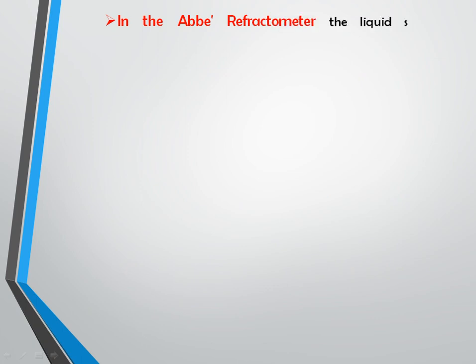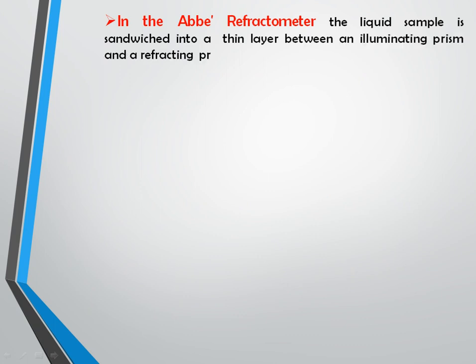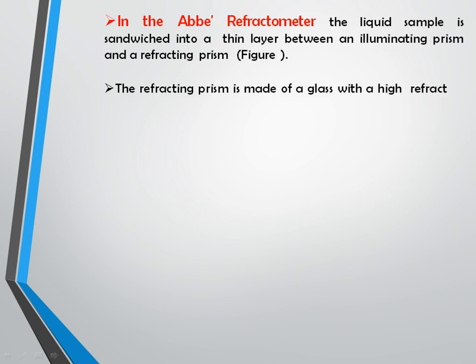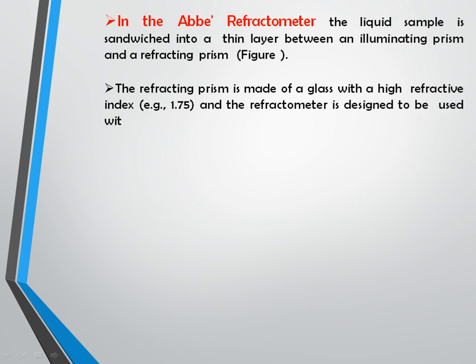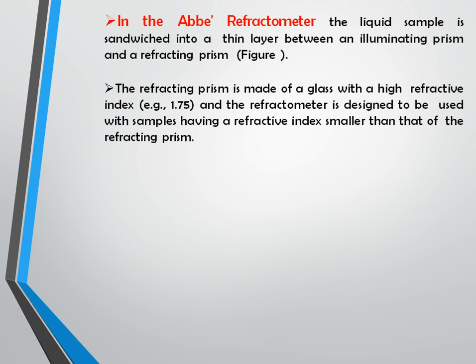Now we will move towards the instrumentation part — the Abbe refractometer, which is used to determine the refractive index of a substance. The liquid sample is sandwiched in a thin layer between an illuminating prism and a refracting prism. The refracting prism is made of glass with a high refractive index of 1.75, and the refractometer is designed to measure samples having a refractive index smaller than 1.75.